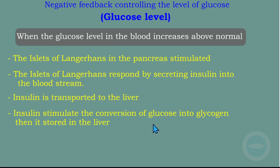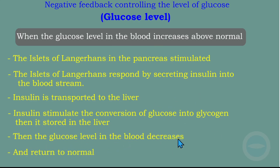Since the glucose level is high, insulin converts the glucose into glycogen, which is stored in the liver. Glycogen is the storage form of glucose. When our body wants to store glucose, it is converted into glycogen and stored in the liver. Since the glucose has been converted, it will not be released into the blood, so the blood glucose level decreases. The glucose level in the blood decreases as glucose is converted into glycogen and stored in the liver. As the blood glucose level decreases, it returns to normal.